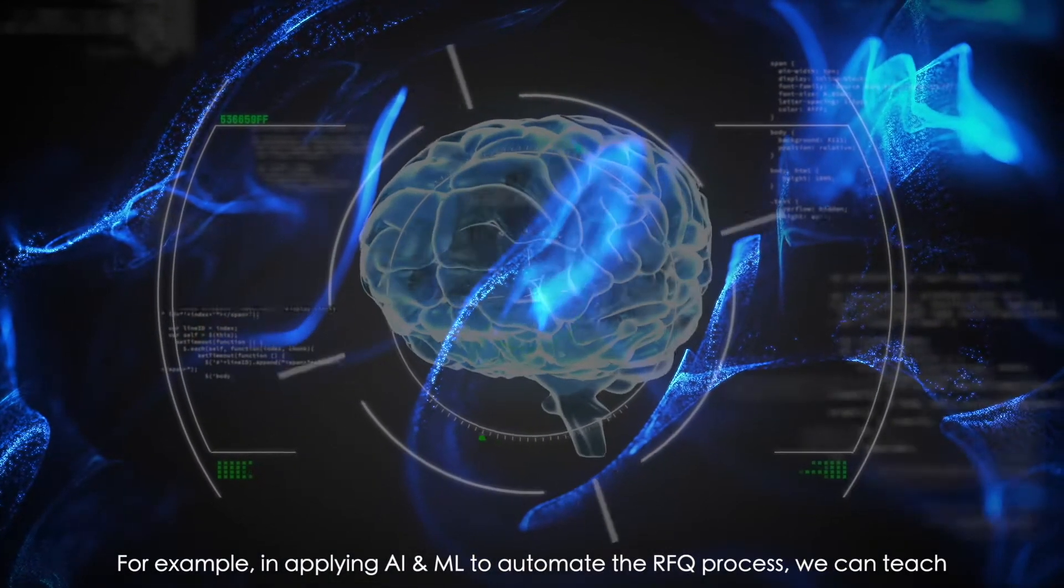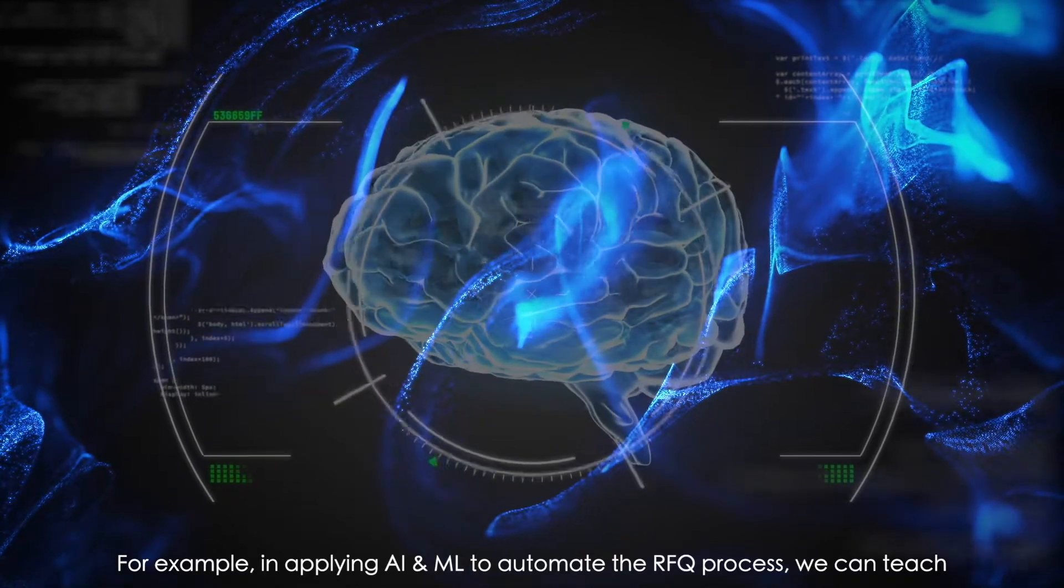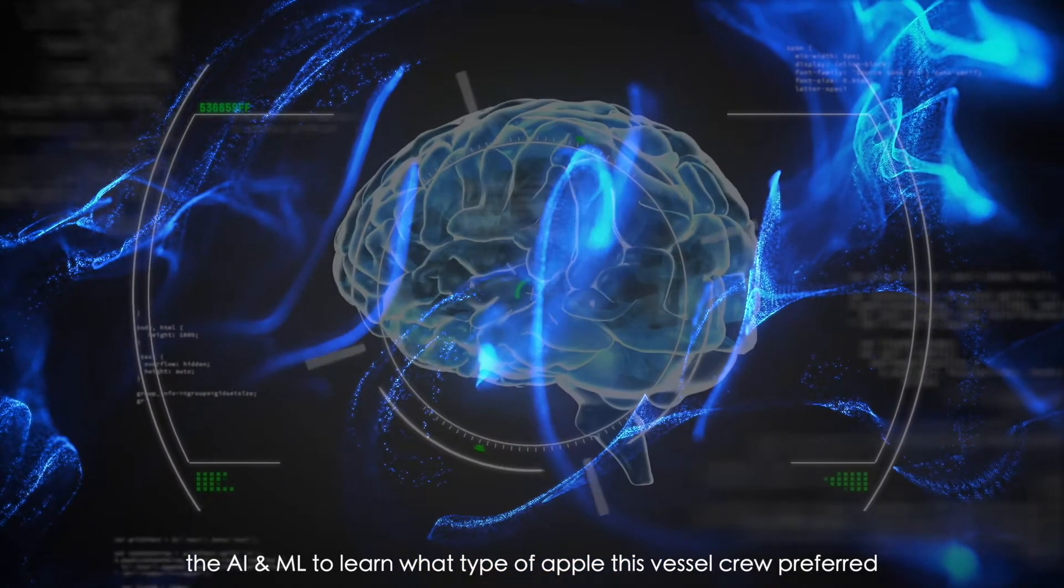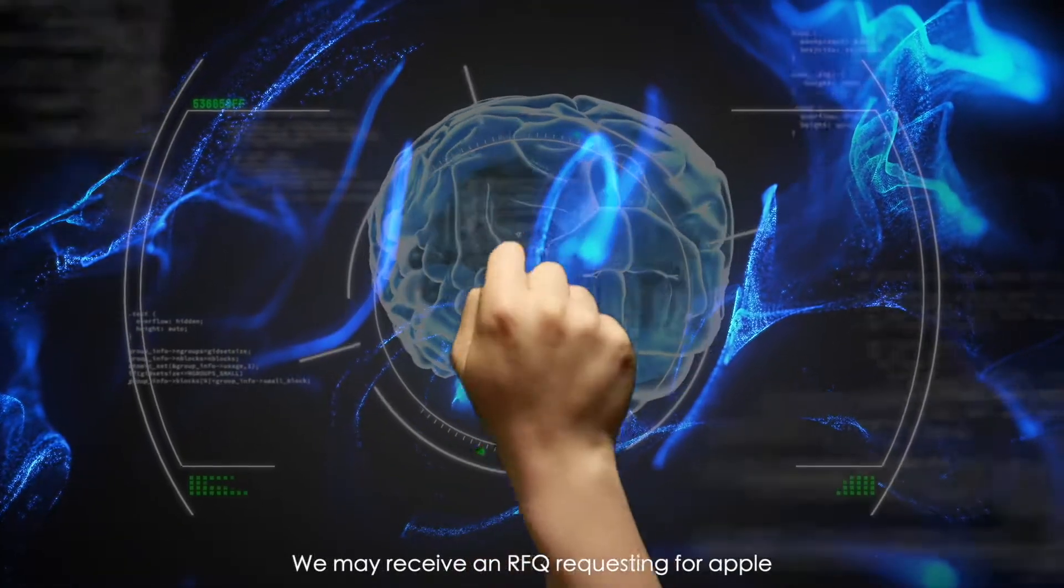For example, in applying AI and ML to automate the RFQ process, we can teach the AI and ML to learn what type of Apple this vessel crew preferred. We may receive an RFQ requesting for Apple.